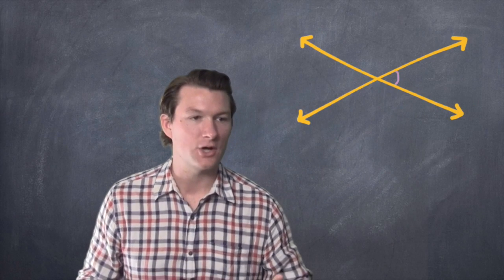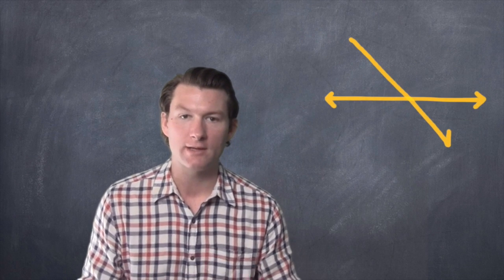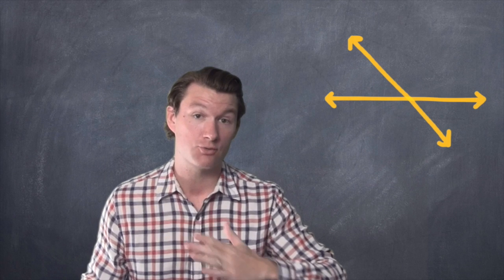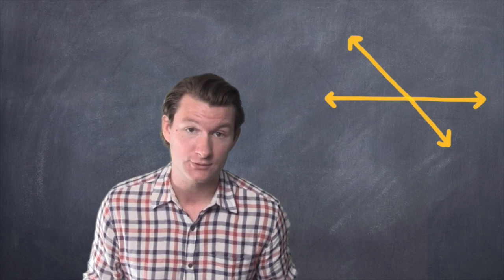Vertical angles are what happens when two angles are back-to-back. One way to look at it is, let's say you had a straight line and then another line crossed through it.